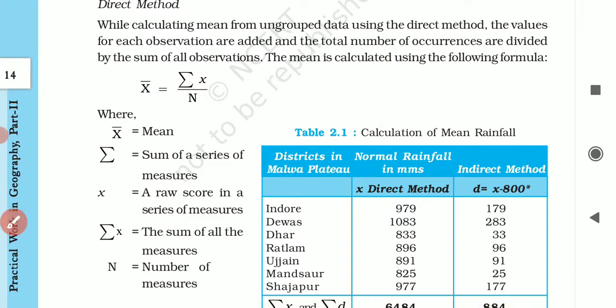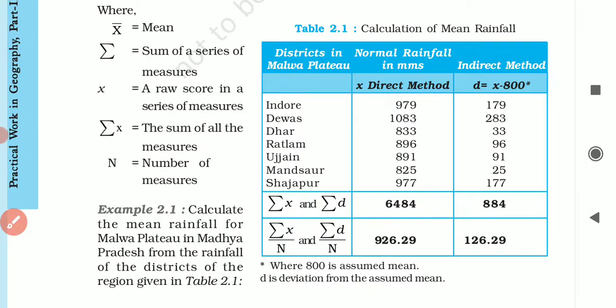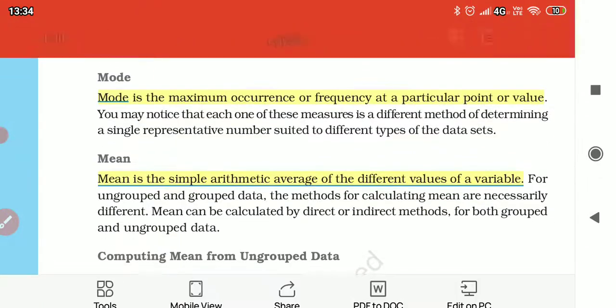Here we will see this table. Here are the districts in Malwar Plateau: Indore, Dewas, Dhar, Ratlam, Ujjain, Mandasaur, Shajapur. Here is the normal rainfall in mm. We have data: 979 for Indore, 1083 for Dewas, 833 for Dhar, and so on. Now what do we need to do here?